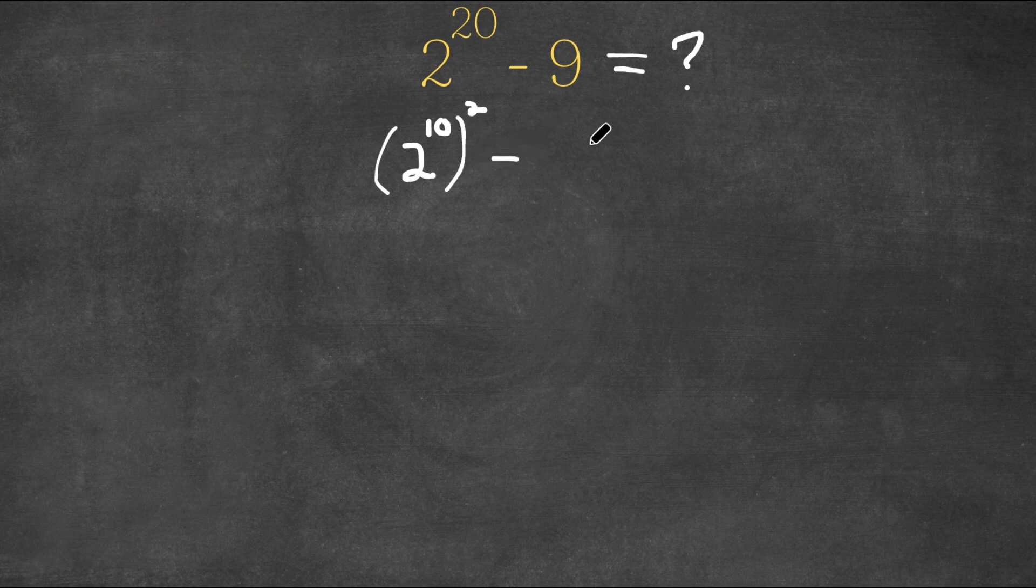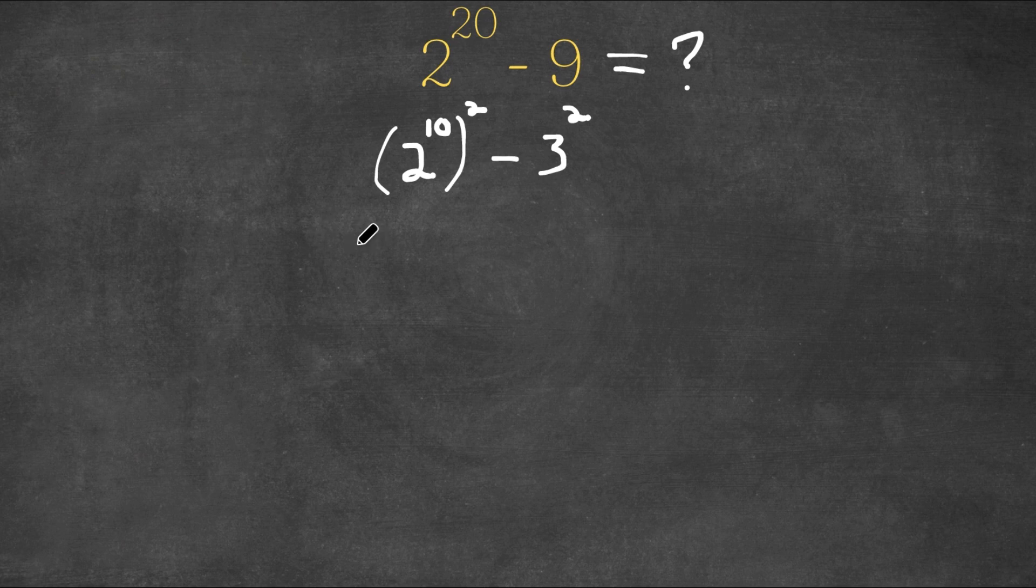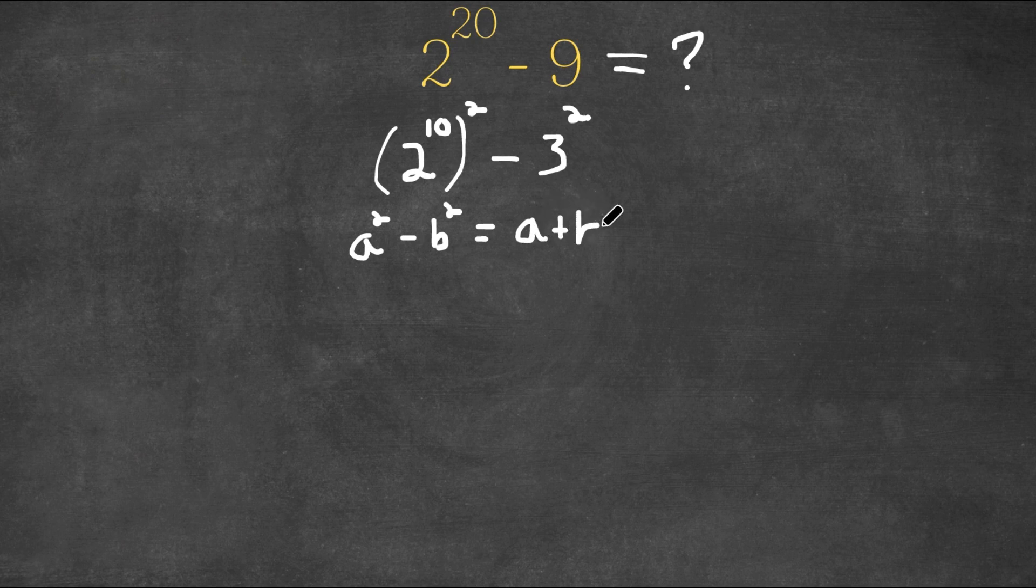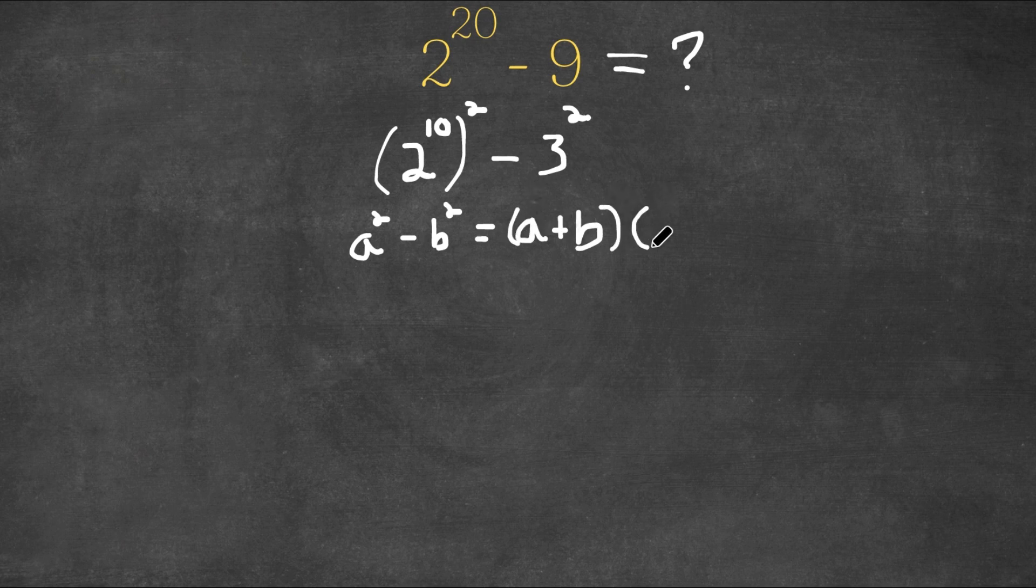And we're going to subtract this with, we're going to change 9 to 3 squared. And remember, if we have a squared minus b squared, this is actually equal to a plus b in parentheses times a minus b.